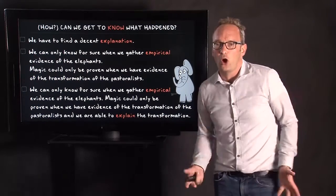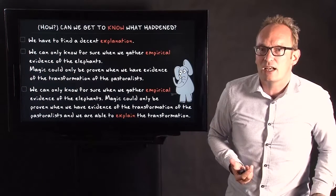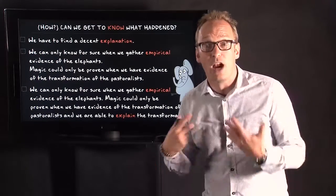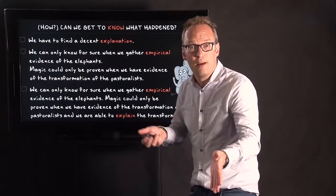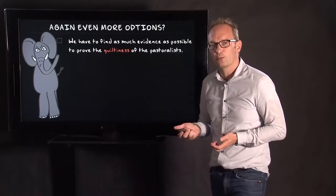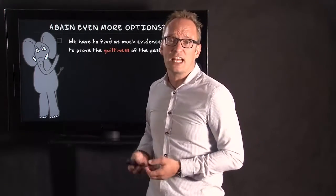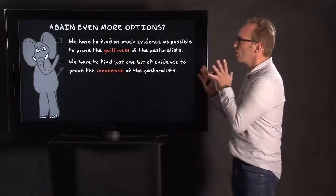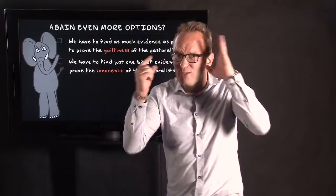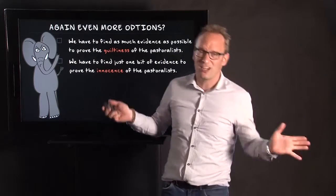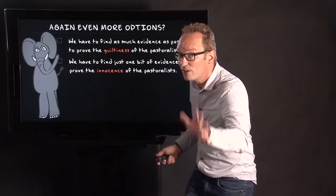And others would say well no we need empirical evidence as well as explanations. So we can only know for sure when we get empirical evidence of the elephants. And magic can only be proven when we have both evidence of the transformation and we are able to explain it. Otherwise we're just looking at magicians. Are there more options? Of course there are more options. We have to find as much evidence as possible to prove the guiltiness of the pastoralist. One could say. How can we get knowledge? Well by proving guilt. But we can also try to prove the innocence. And that's a different way of looking. The innocence of the pastoralist. Simply track the pastoralist. Maybe they were far away. But then still the question of magic remains.